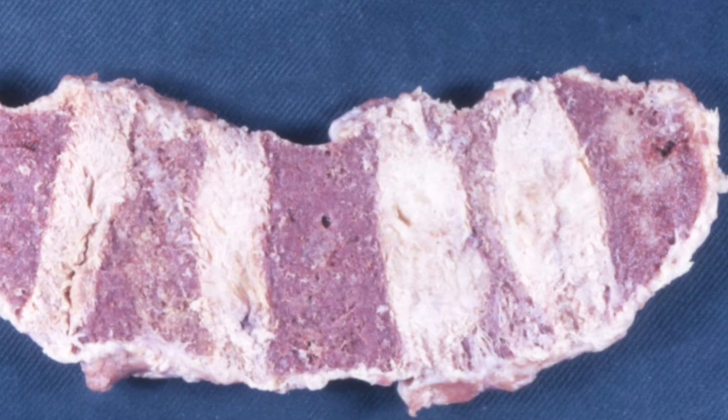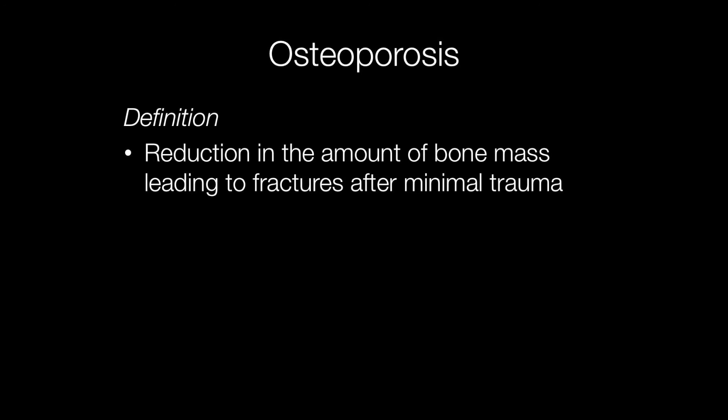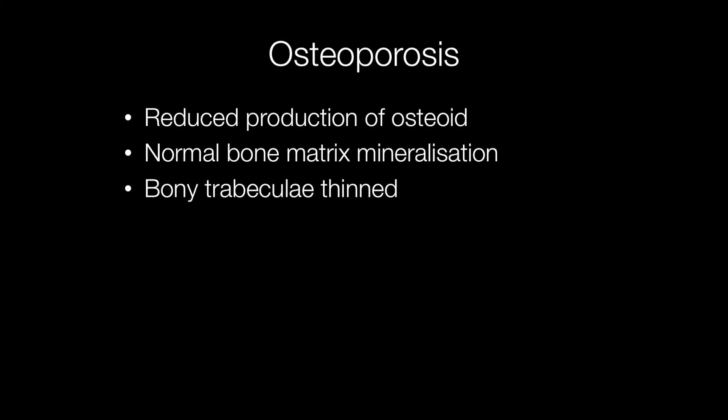Here is a section of a strip of vertebrae showing a crush fracture as a result of osteoporosis. Osteoporosis is a reduction in the amount of bone mass leading to fractures after minimal trauma. There is reduced production of osteoid, and the bone matrix shows normal mineralisation, but the bony trabeculae are thinned and more widely spaced.